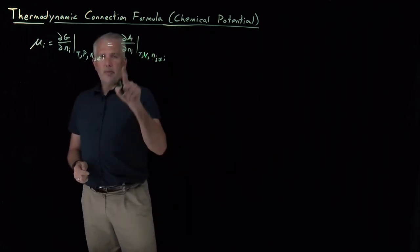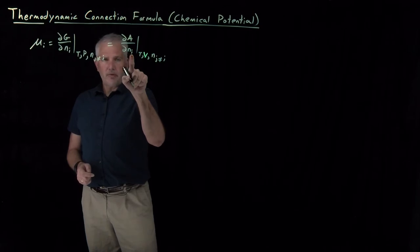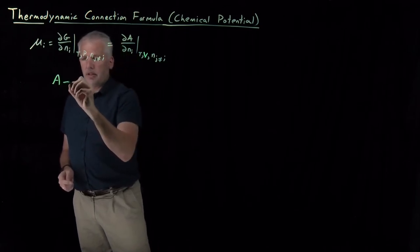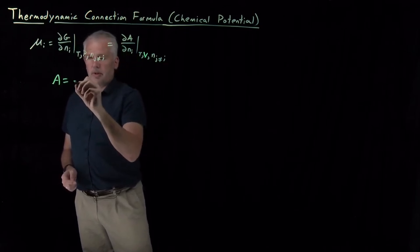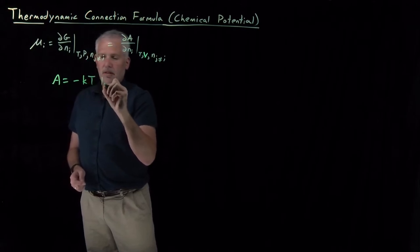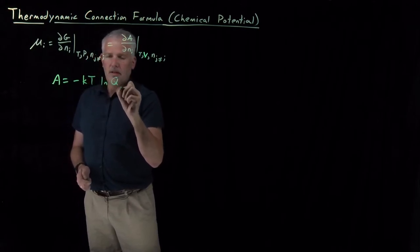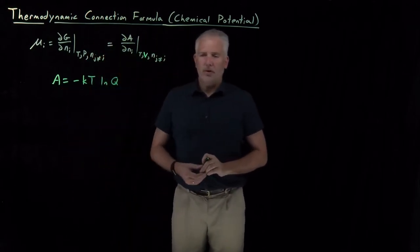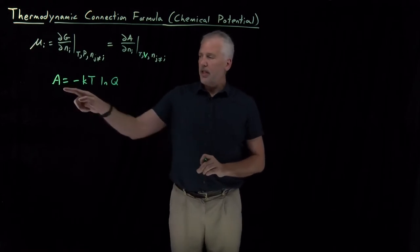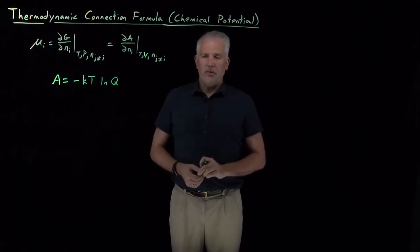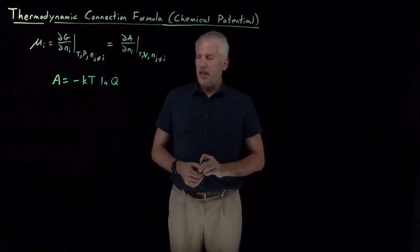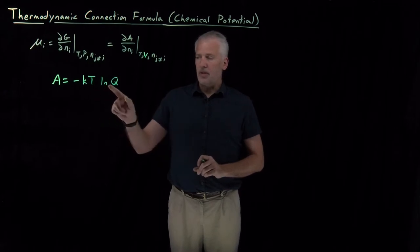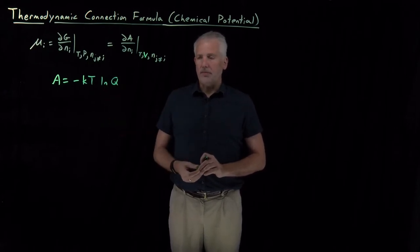The reason I've reminded us of this particular form of the chemical potential is because probably the easiest place to start is with the Helmholtz free energy, because the thermodynamic connection formula for the Helmholtz free energy has a particularly simple form: just minus kT times the log of a partition function.